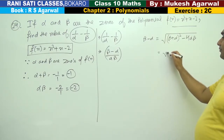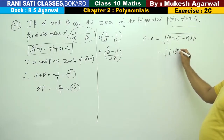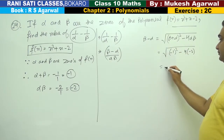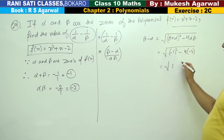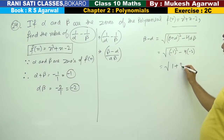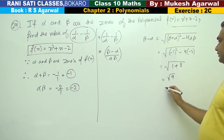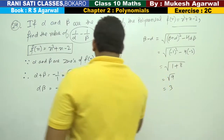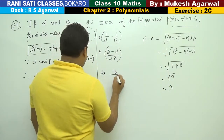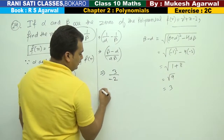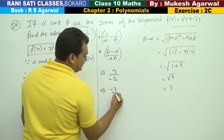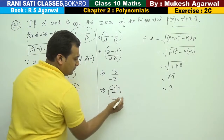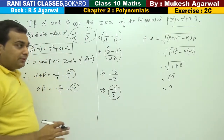We need to find beta minus alpha under root. Substituting the known values, we get the result. The final answer is minus 3 by 2, which completes our question.